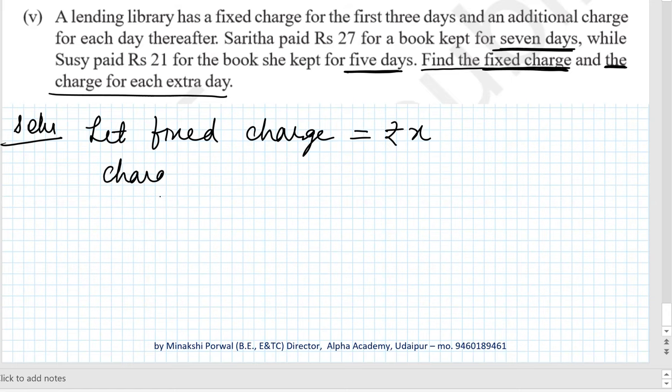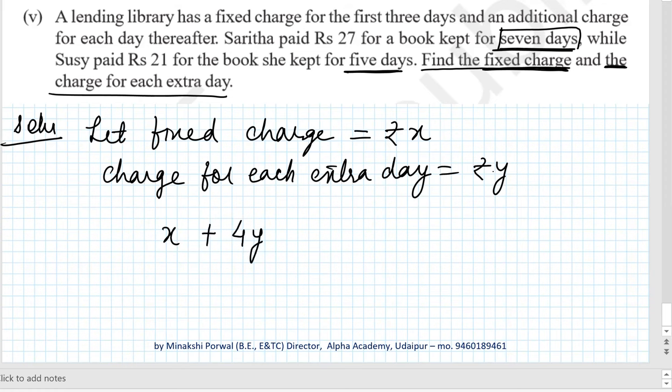Now, if a book is kept for seven days, three days will be in the fixed charge only, and for the remaining four days it will be charged according to the extra day value. So x plus 4y equals 27. Similarly, when a book is kept for five days, x rupees will be for three days and the remaining two days will be charged as extra days, so x plus 2y equals 21.